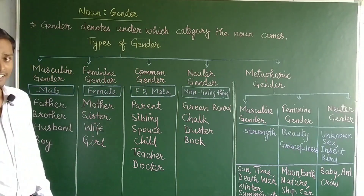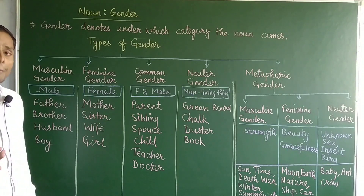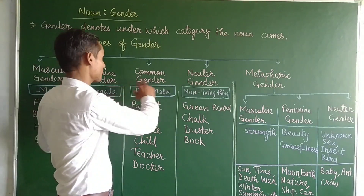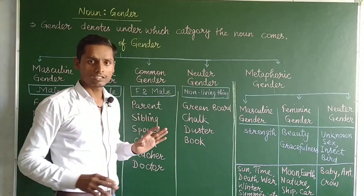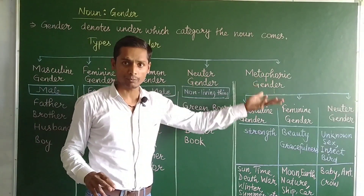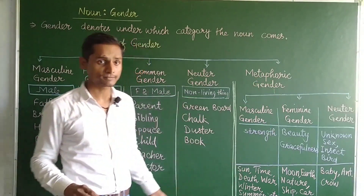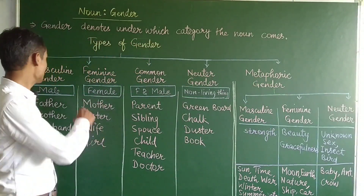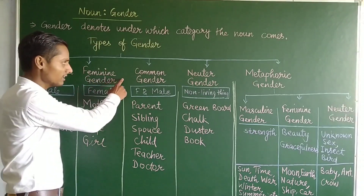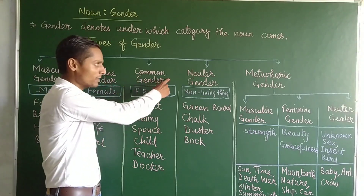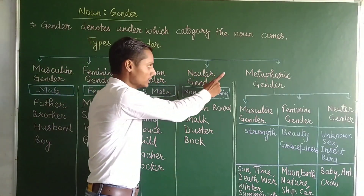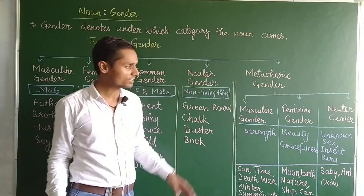How many types of gender are there? Basically in your book we study four types. The first is masculine gender, the second is feminine gender, the third is common gender, and the fourth is neutral gender.